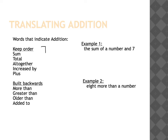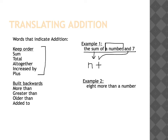One category is where we keep the order. So if I said 'the sum of a number and seven,' sum in the English language means addition, and it also means that the order isn't going to change. The numbers and words I use after that keep the same order. So 'the sum of a number and seven' becomes n + 7, and the order of the language doesn't change.